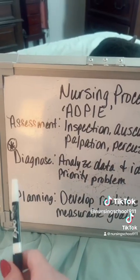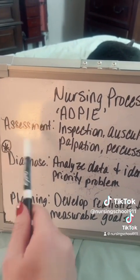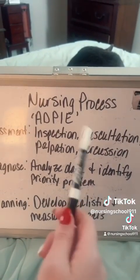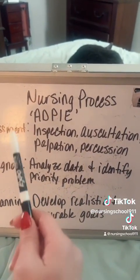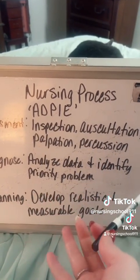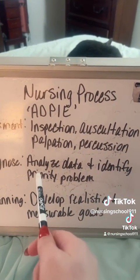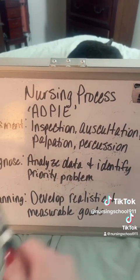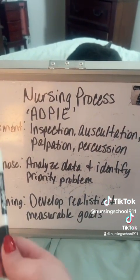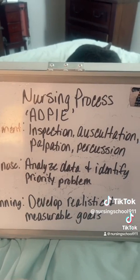Next is diagnose. This is where it gets hairy and we'll come back to this, but here we analyze the assessment data we just collected and identify the priority problem for our patient based on the ABCs: airway, breathing, circulation.